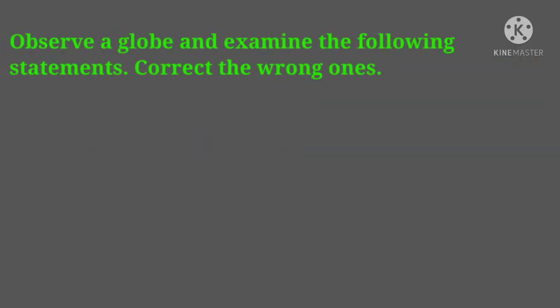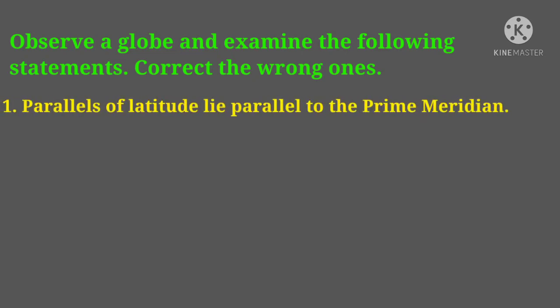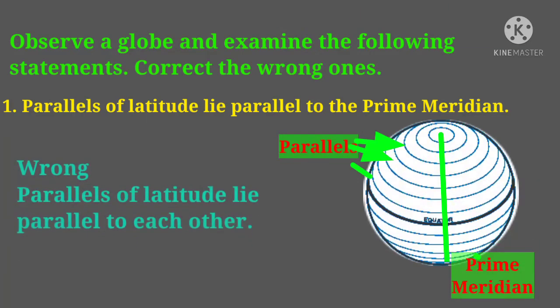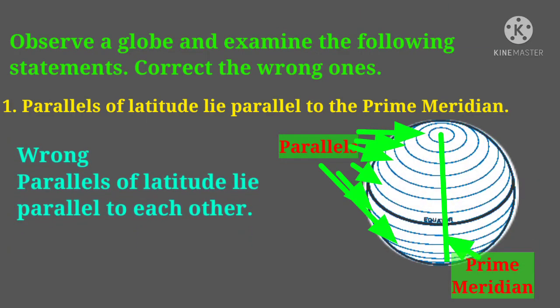Here is question B: observe a globe and examine the following statements, and correct the wrong ones. First one: parallels of latitude lie parallel to the prime meridian. The answer is wrong. Parallels of latitude lie parallel to each other.